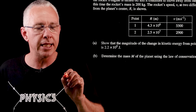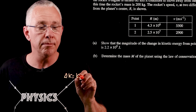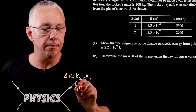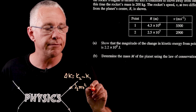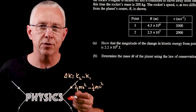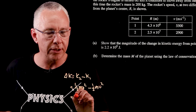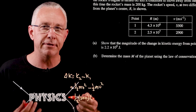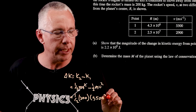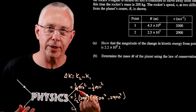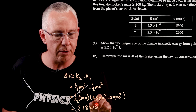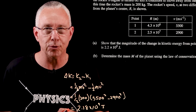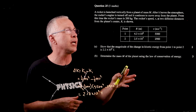The change in kinetic energy equals ½mv₂² − ½mv₁². With m = 200 kg: ΔKE = ½ × 200 × (2900² − 5500²), giving approximately 2.18 × 10⁹ J, which rounds to 2.2 × 10⁹ J as required.